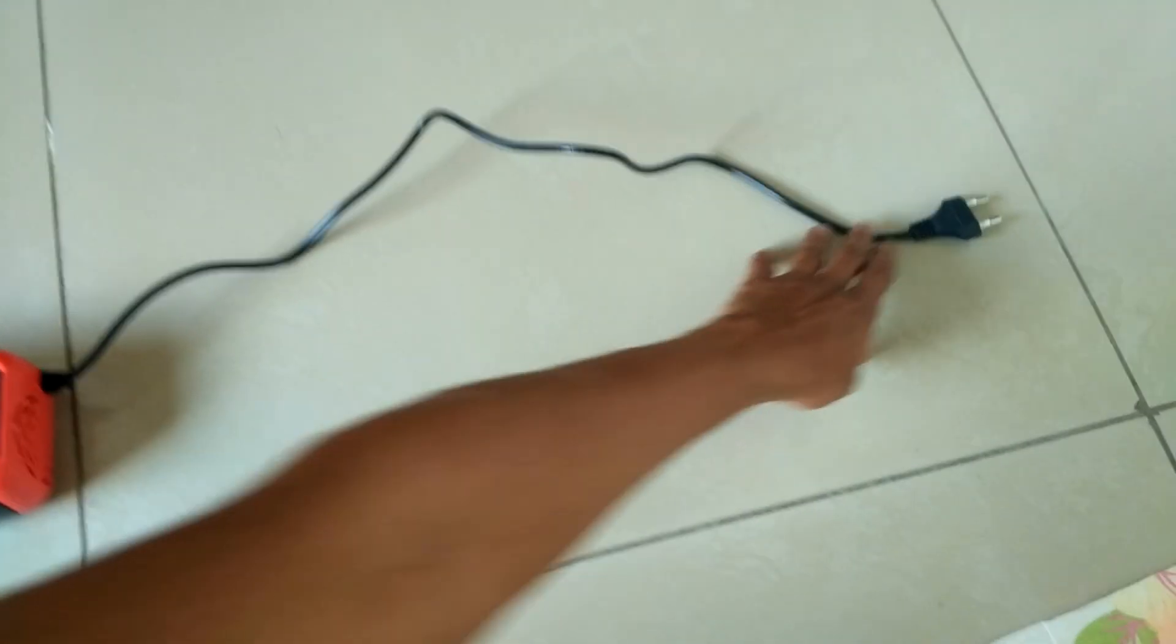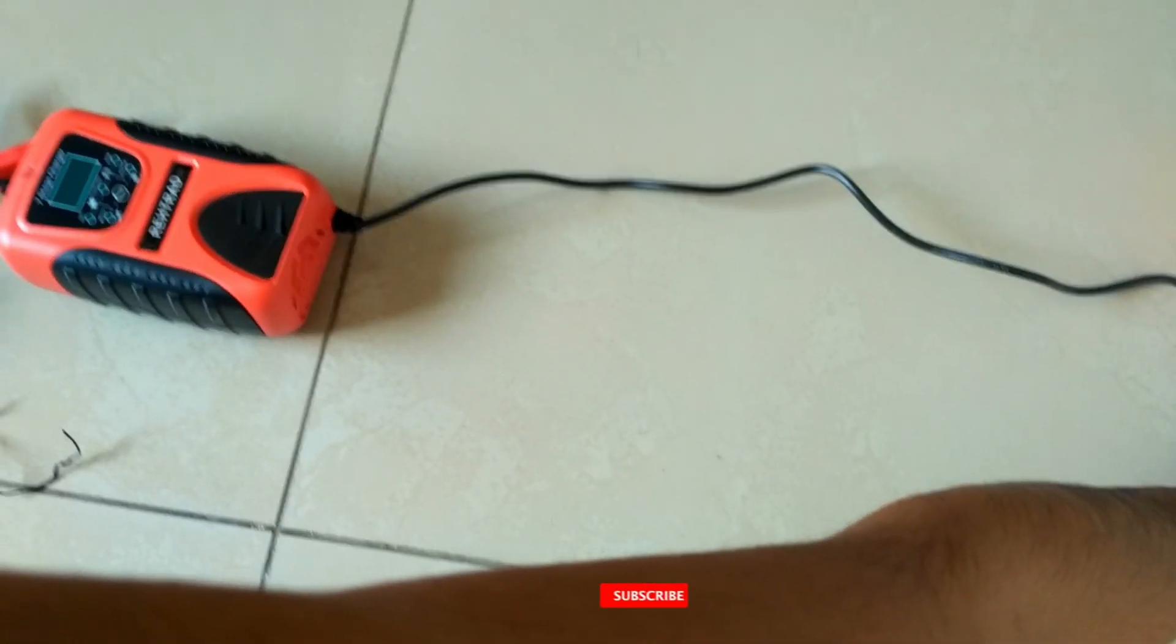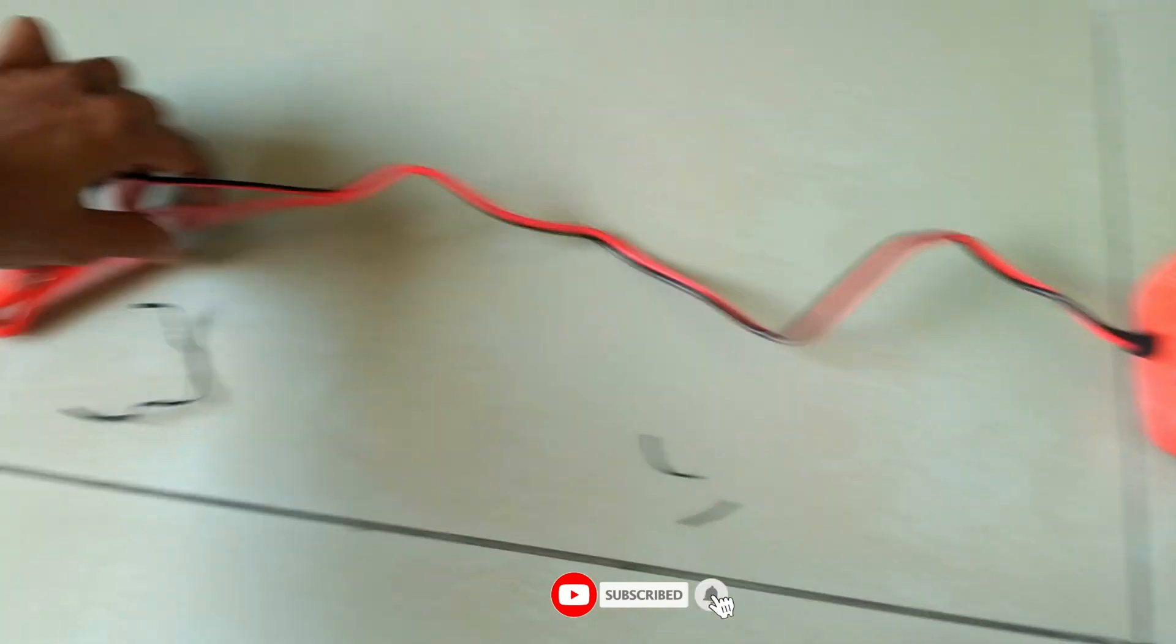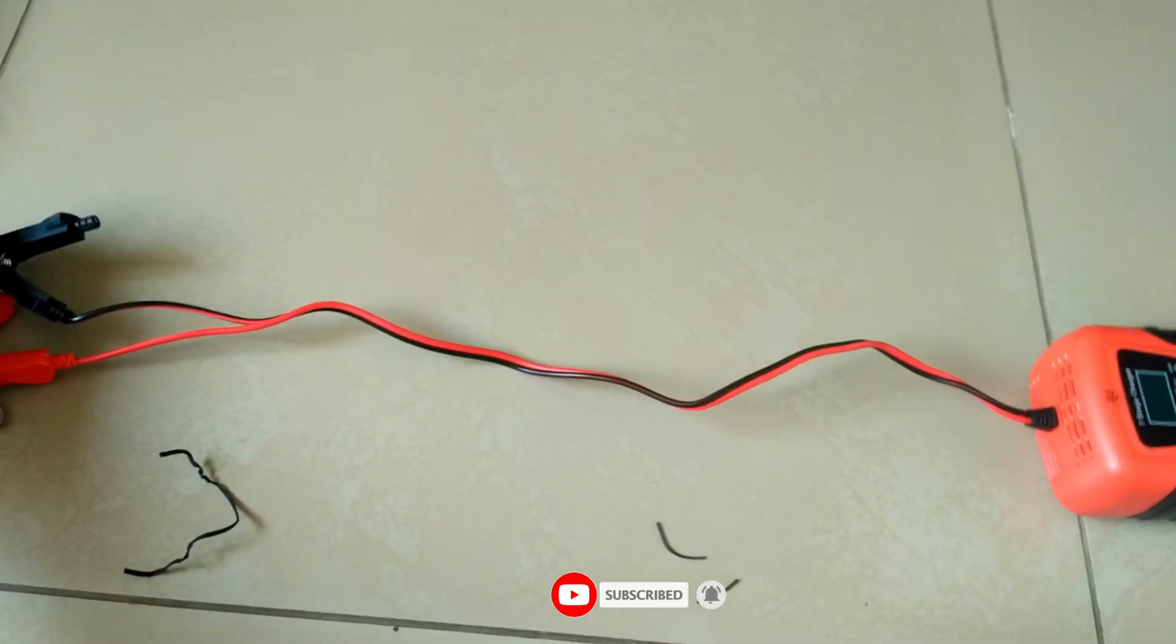Each tile on the floor is 2 feet in length. If I put the wire from end to end, you can see it's just 2 feet wire. Now measuring the output wires, it's also 2 feet in length.